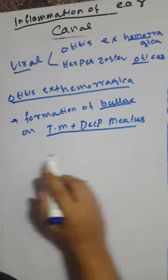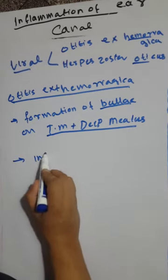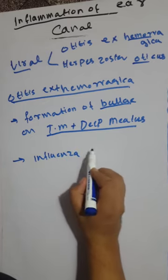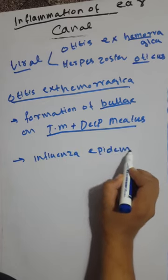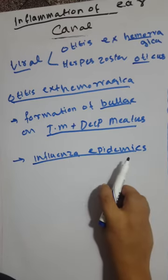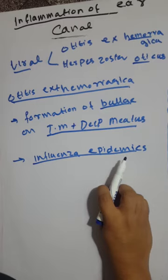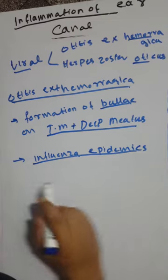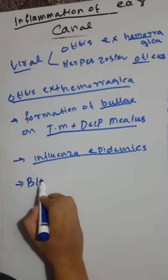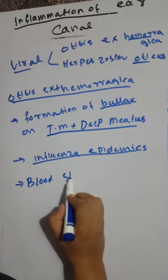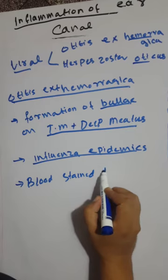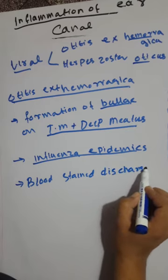Otitis externa hemorrhagica is mostly seen in influenza epidemics. In these epidemics, bullae form on the tympanic membrane and deep meatus. This condition causes severe pain in the ear and blood-stained discharge when the bullae rupture.